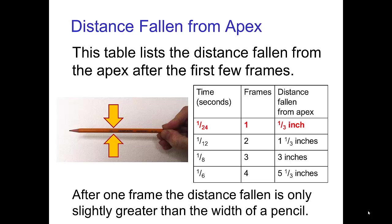Using basic physics, we can calculate the distance that an object falls after one frame, two frames, etcetera. This table lists the distance fallen from the apex after the first few frames.